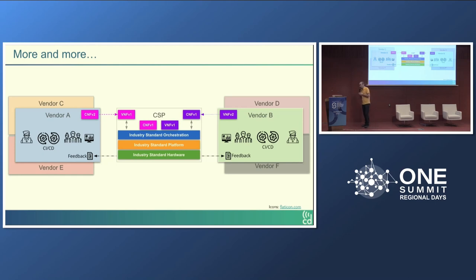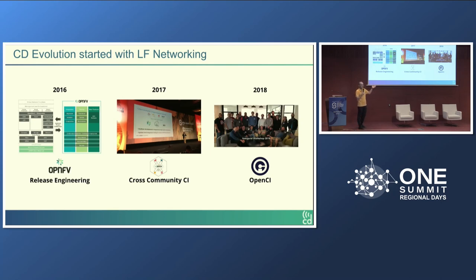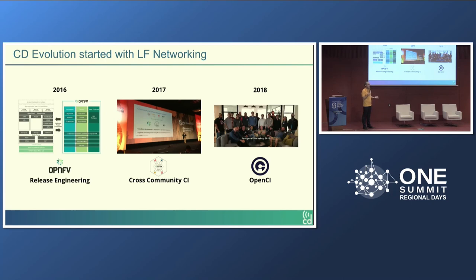Reaching out to other projects and communities, release engineering gave us some head start under OPNFV, and then we established an initiative called Cross Community CI within OPNFV. You can see a photo from what I think is the 2017 Open Source Summit Europe in Prague, where work on OPNFV was being presented. Then in 2018 we got a lot of support from other communities and had a Continuous Delivery Practitioners workshop in Los Angeles, co-located with Open Networking Summit.